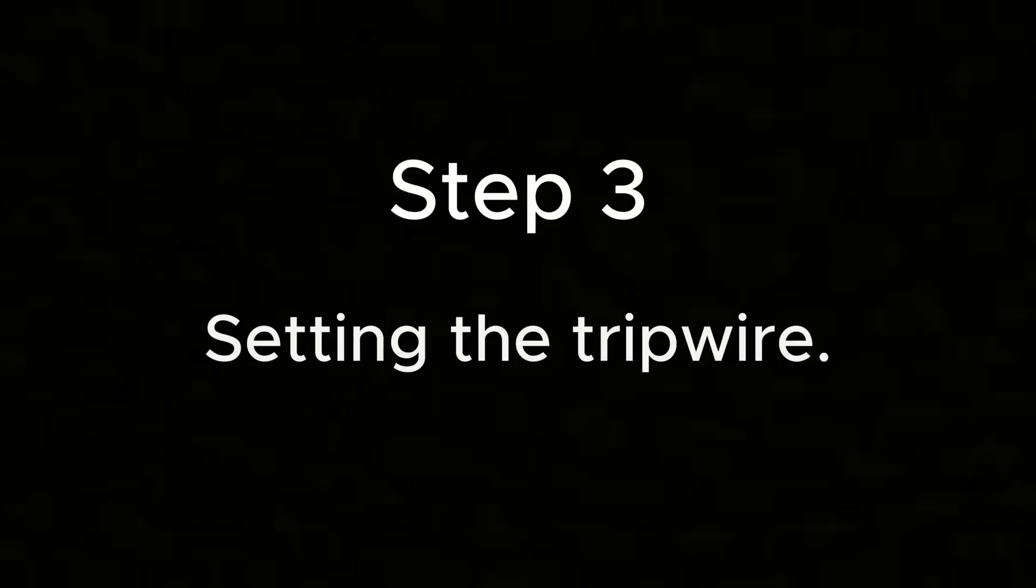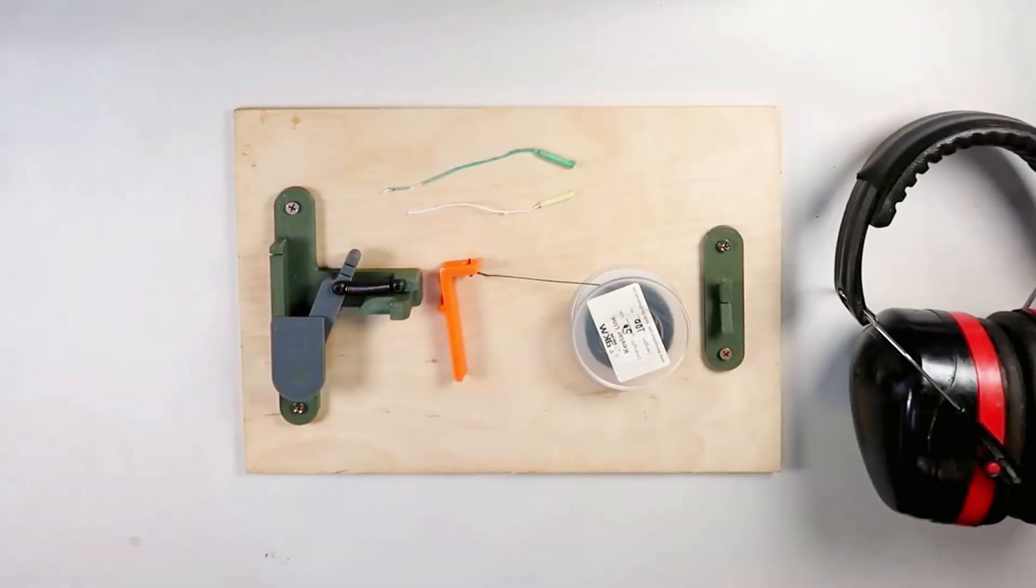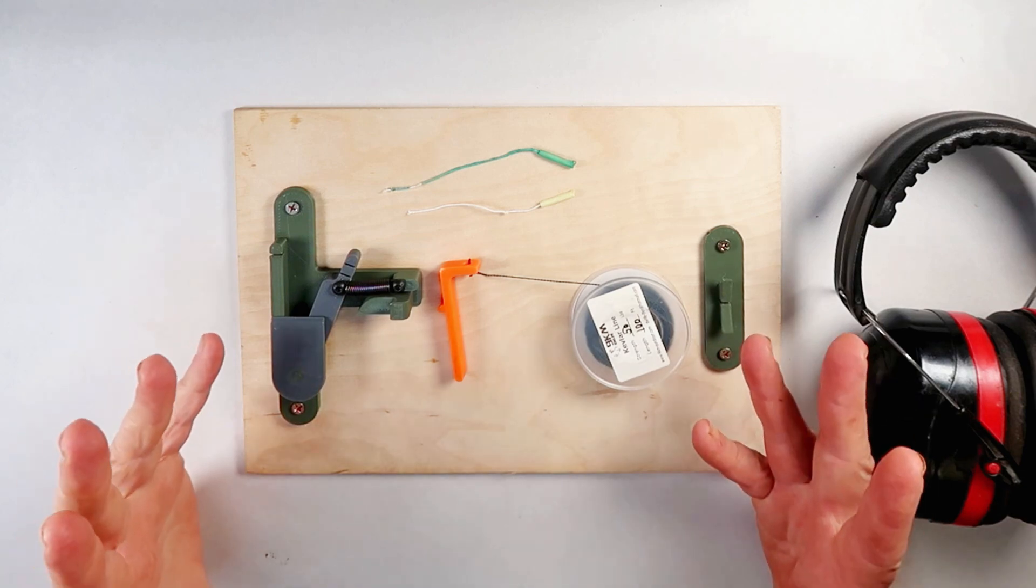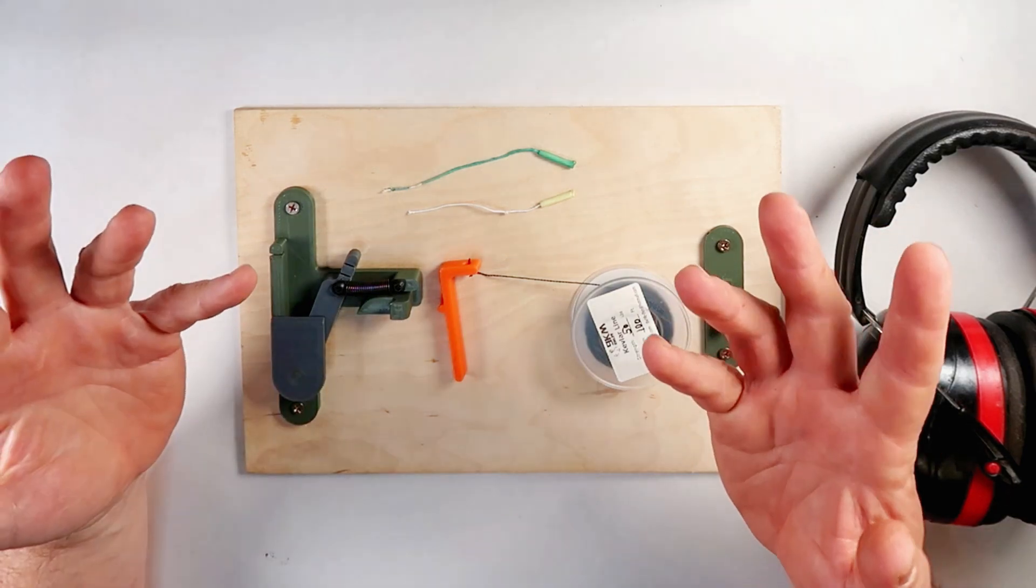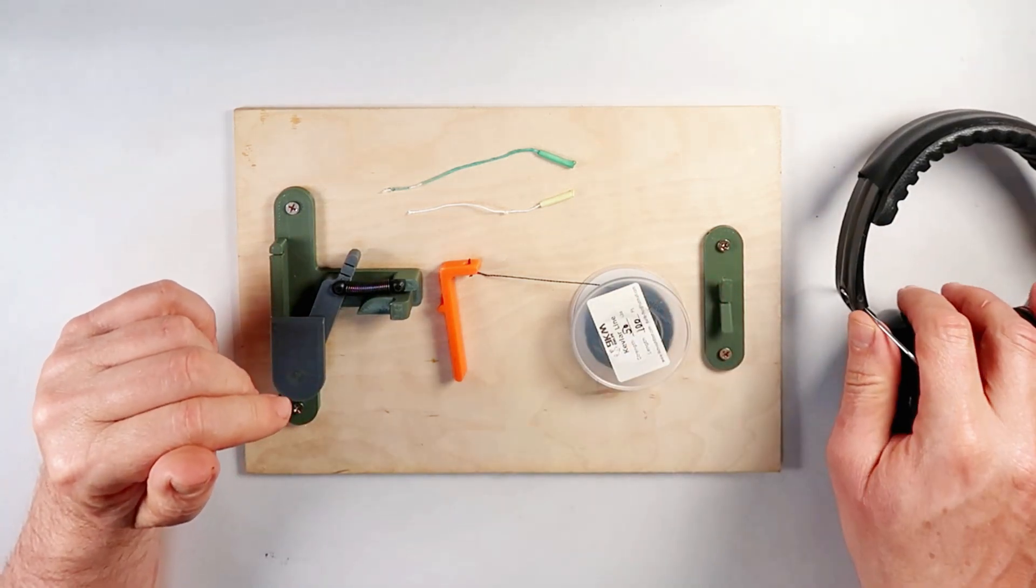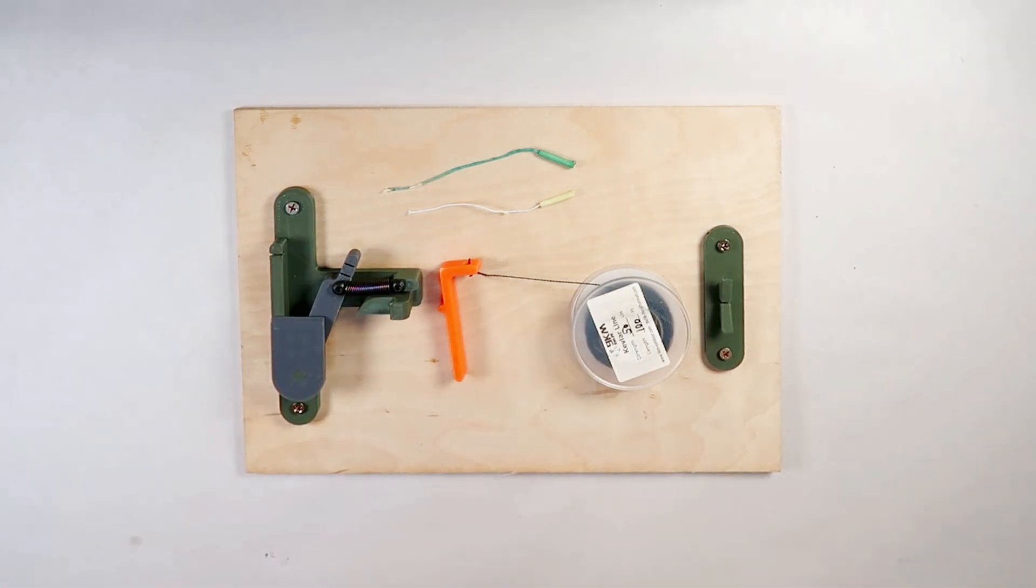Step 3. Setting the tripwire. I use the tripwire whilst camping. It gives me warning of approaching bears and hillbillies. It can also be used for home protection and activities like airsoft.